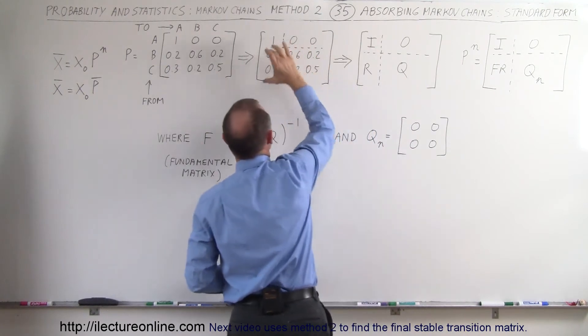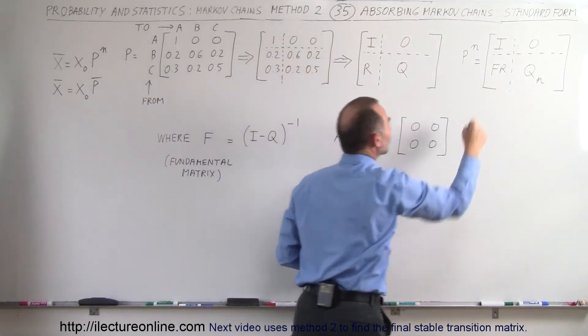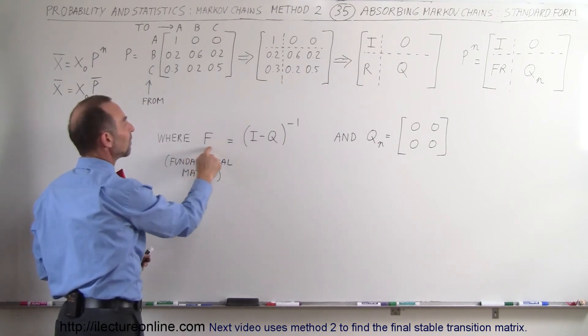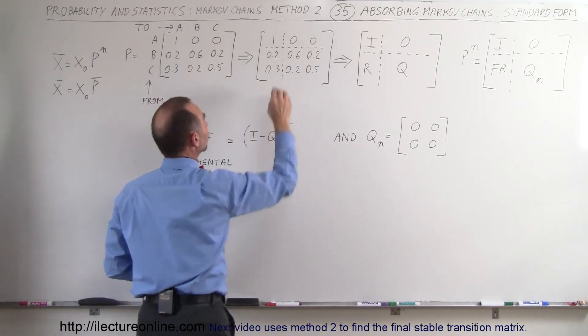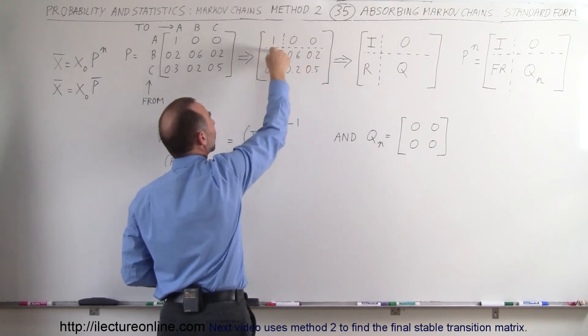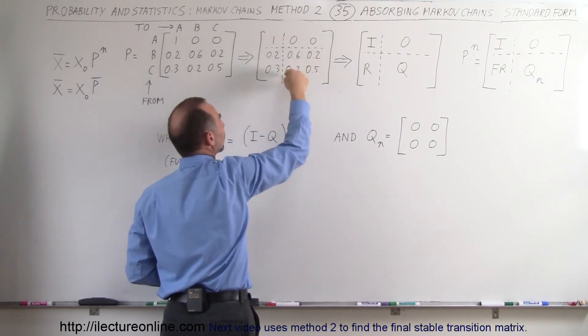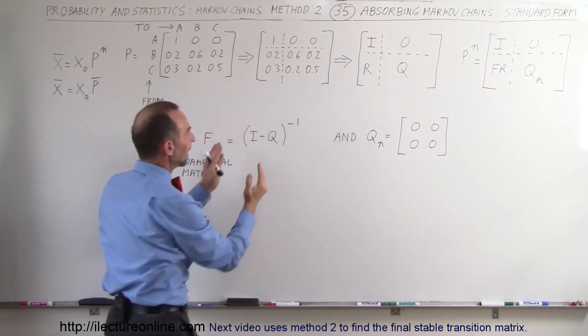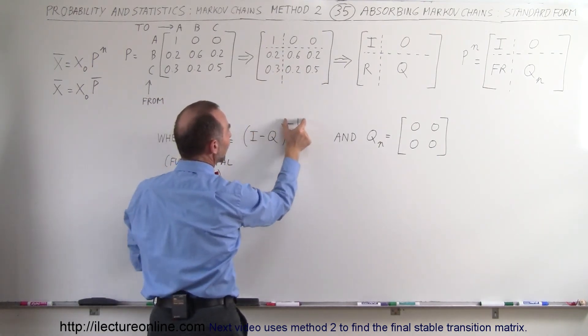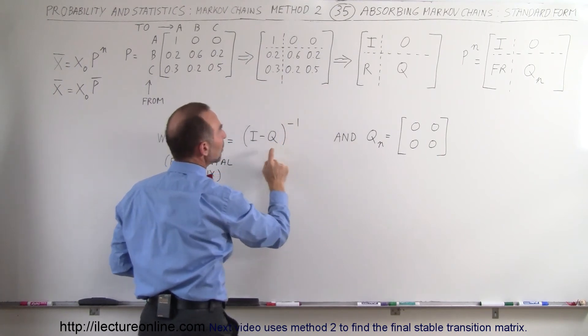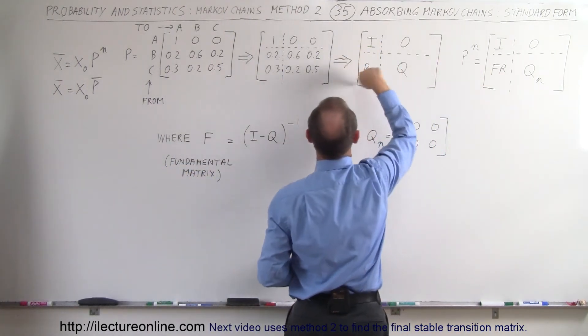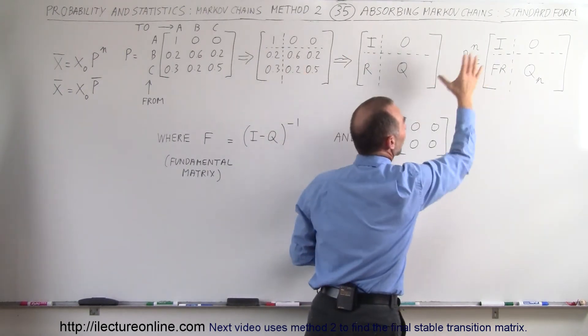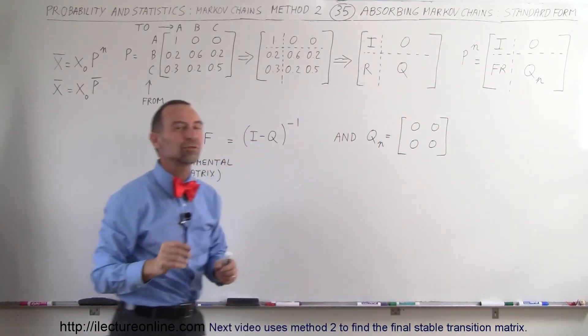The R matrix is right here, which is this matrix right there. The F matrix is what we call the fundamental matrix, and that can be found by taking the identity matrix minus the Q matrix. Of course, we don't take a one by one and subtract the two by two. We're going to turn this into a two by two identity matrix, then take the difference of those two matrices, take the inverse of that, and then multiply times the R matrix, which is over here, those two numbers right there. Then we have what we call a stable transition matrix.